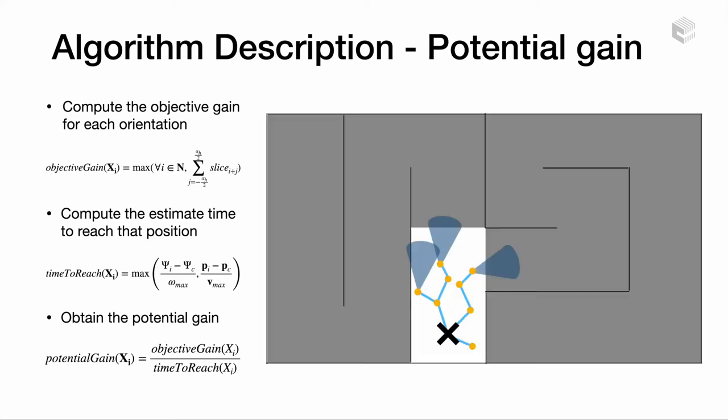This potential gain results in a balanced metric between exploring the robot's vicinity by penalizing long distance paths and moving to distant regions of interest with sufficiently high gain. It should be noted that it is an estimate which does not consider the robot dynamics and the final simplified path. The purpose is to obtain a ranking between candidates and there is no need for an accurate time calculation.